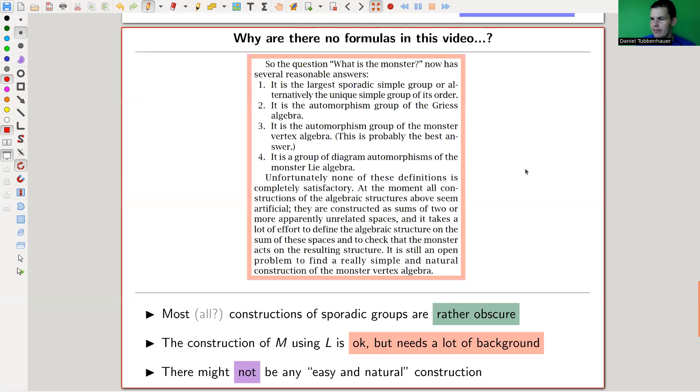Okay, so here's a link in the description, a picture I took from a, what is it, I think article of Borcherds. And yeah, so Borcherds ends essentially with this following. So the question, what is the monster, now has several reasonable answers, right? Kind of the monster goes all the way around. People kind of guess its existence by character calculations and then you need to construct it. Well, it's the largest sporadic simple group which is not a very satisfying answer I think. Anyway, so I would like to ignore this. I'm not sure whether this is exactly a good answer, but the other one, let's have a look at the other ones.